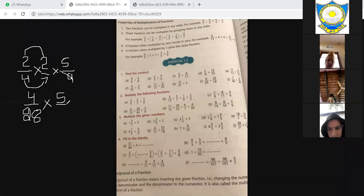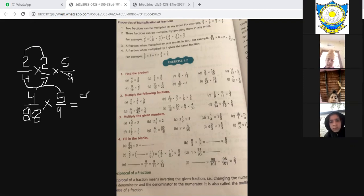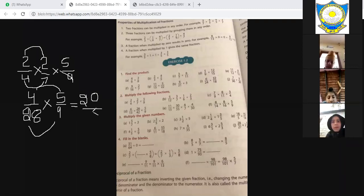Again see, four you will multiply with five, how much will come? Twenty. Twenty-eight you will multiply with nine, whatever answer comes, you write in the denominator. This is your answer, understood? Second question will happen, all parts will happen of the second question?